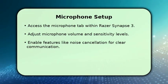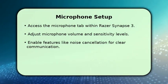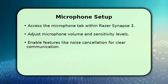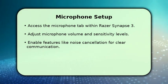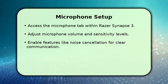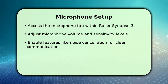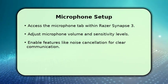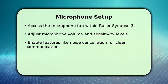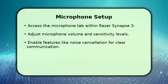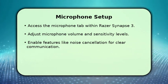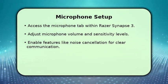Next, let's configure your microphone for crystal clear communication. In Razer Synapse 3, navigate to the microphone tab. Here, you can adjust the microphone volume and sensitivity to ensure your voice is picked up perfectly. Consider enabling features such as noise cancellation to minimize background distractions, making your calls and in-game chat much clearer for everyone listening.